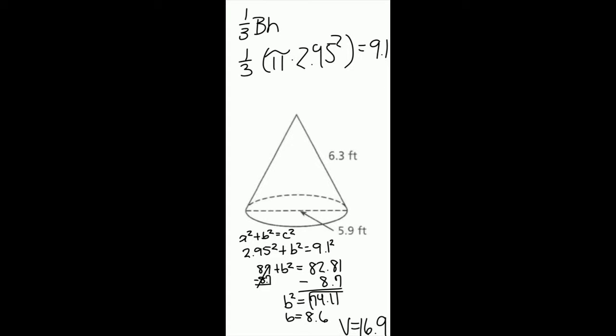One-third pi times radius squared, and we get 9.1. Since we do not have the height, we must find it by using the Pythagorean theorem.